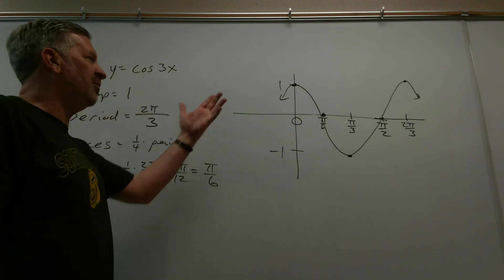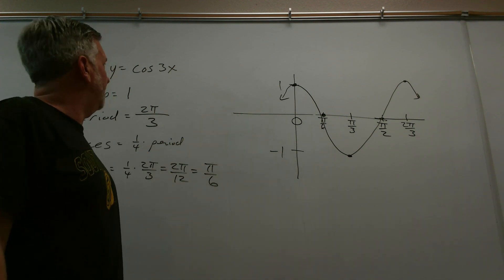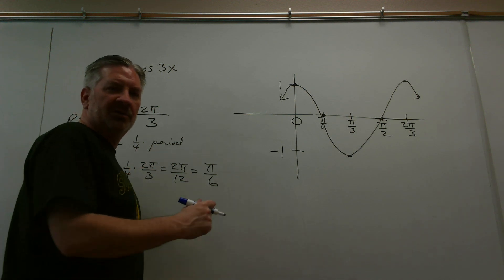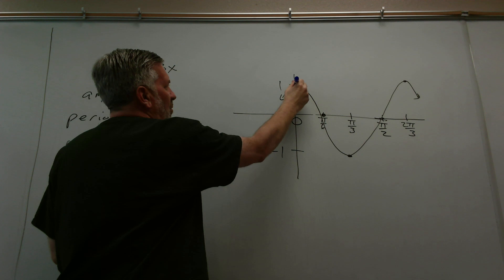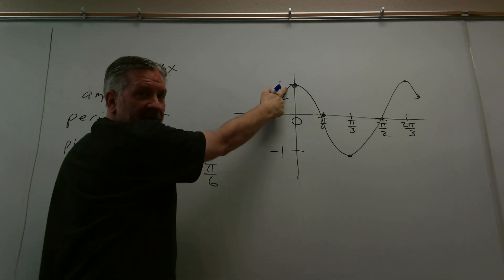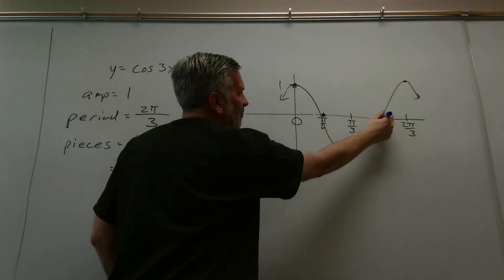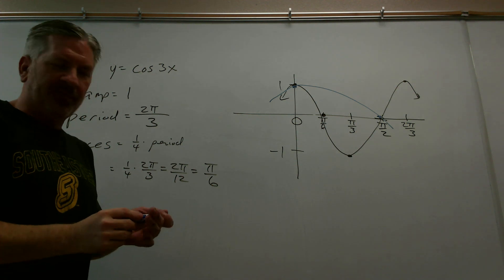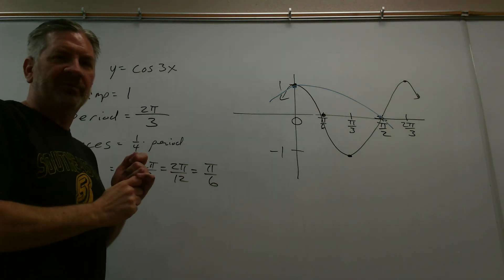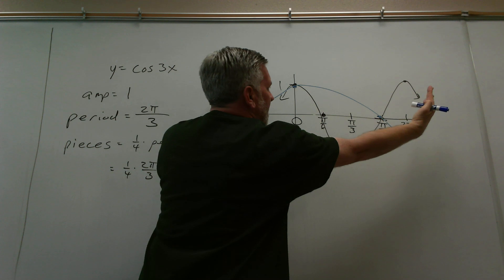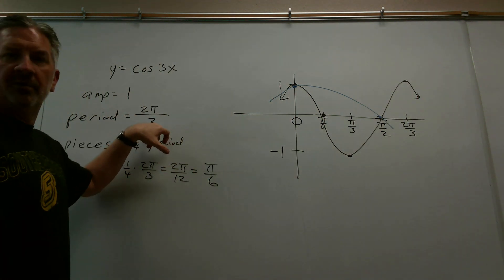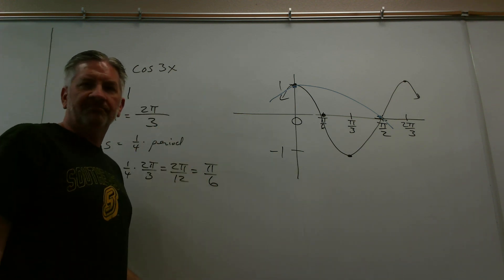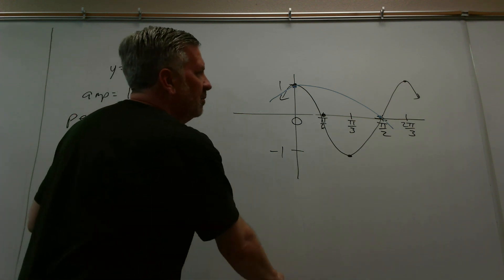If you sketch the graph of cosine x alongside this one, the original cosine graph has its middle at pi over two, much further out. You can see the difference — what we've done is taken the original cosine graph and squished it in, making the period shorter. Dividing by three made the period shorter — that was a horizontal shrink.